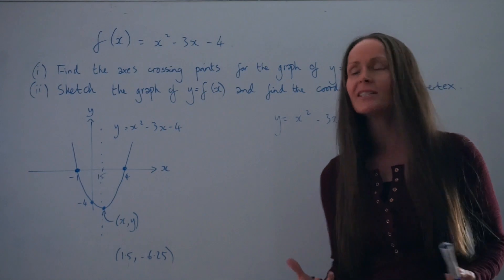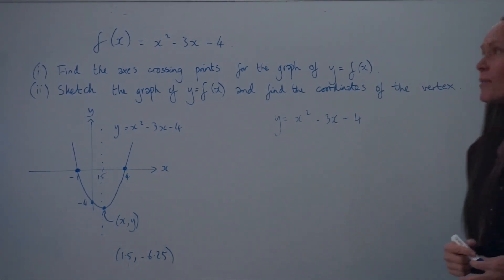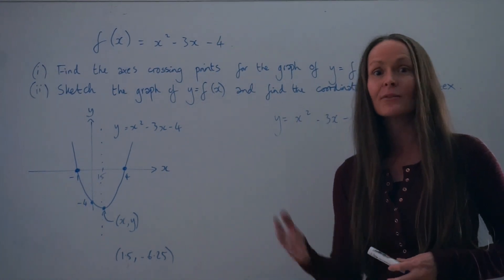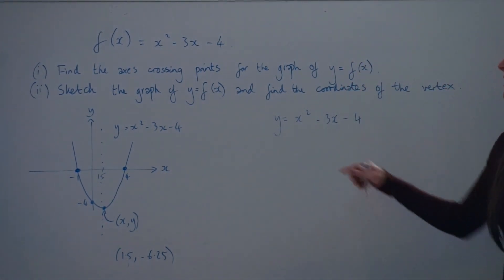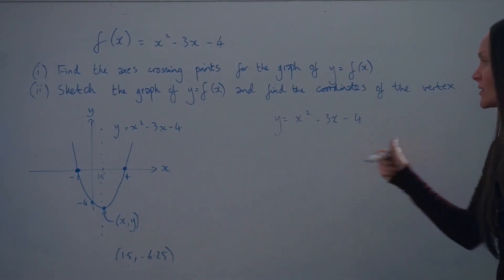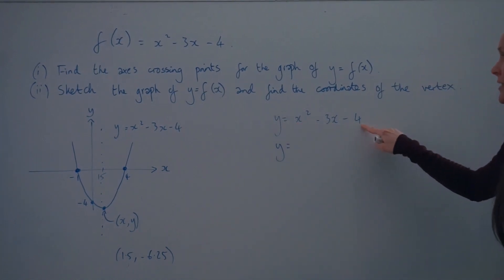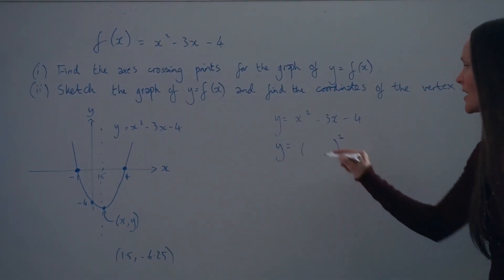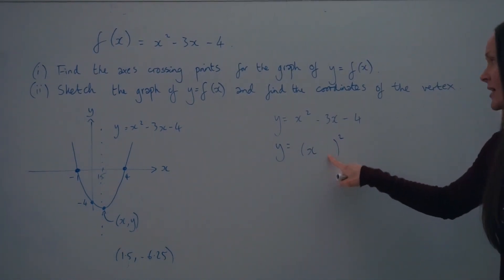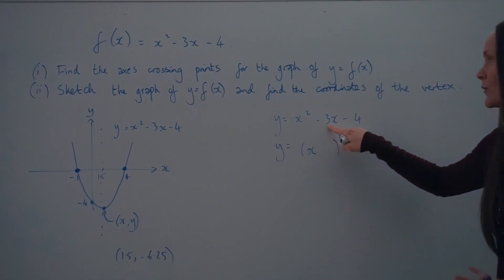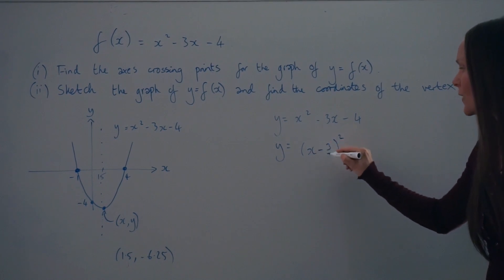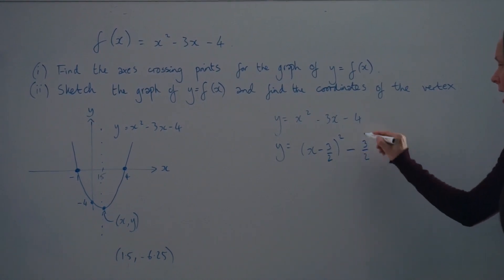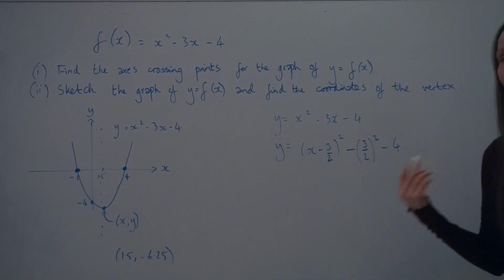Method 2 is called completing the square. Write out the equation again and rewrite the right-hand side in completed square form. You need square brackets: the number inside is always half the coefficient of x, so half of -3 is -1.5. Then subtract that number squared, and subtract 4. So the completed square form is (x - 1.5)² - 2.25 - 4.